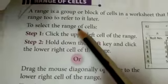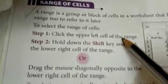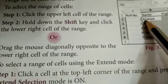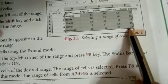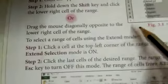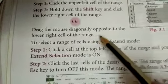To select the range of cells, click the upper left corner, upper left cell of the range. We have clicked here. Hold down the shift key and click the lower right cell of the range. Hold down shift key and click, or drag the mouse diagonally opposite to the lower right cell of the range.